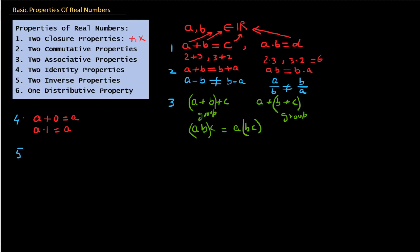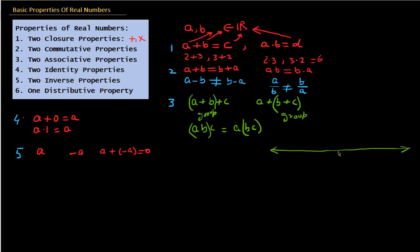The fifth property is the inverse property for addition and multiplication. For addition, this says that if there is a number A, then there exists a number minus A, so that if we add these two numbers we get 0. So A plus (minus A) equals 0. A could be positive or negative, and minus A adjusts accordingly. You can refer back to the number line to visualize this, with 0 in the middle.